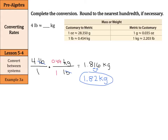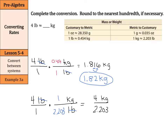Now, the neat thing about dimensional analysis is we could solve this one other way. We're still going to have kilograms over pounds so our pounds can cancel, but what if we used the fact that 1 kilogram is 2.203 pounds? We get the same answer: 4 times 1 is 4 kilograms over 2.203. When we divide 4 by 2.203, we get 1.8157 and it keeps going. Our conversion factors are approximations, so when we round to the nearest hundredth, we get 1.82 kilograms again.